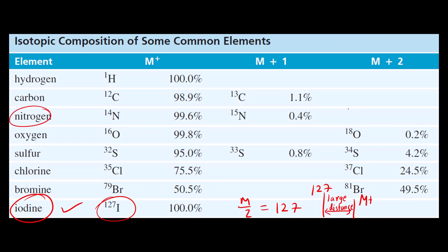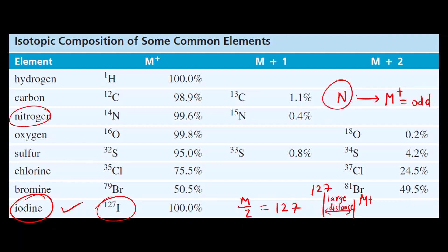For nitrogen, we apply the nitrogen rule. If an odd number of nitrogens is present — say one nitrogen — then the M+ value will be odd. If an even number of nitrogens are present, the M+ value will be even. Along with this, you will see some fragment peaks with even m/z values. If you observe an odd M+ ion and some even m/z fragments, the heteroatom is nitrogen.